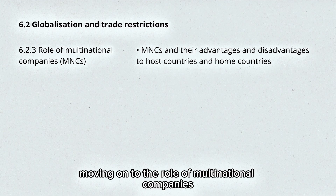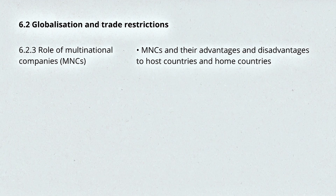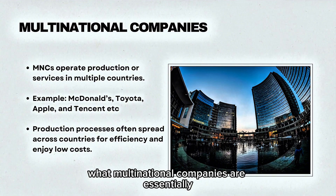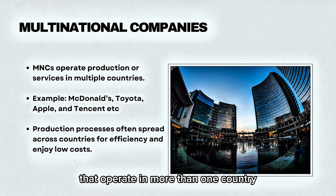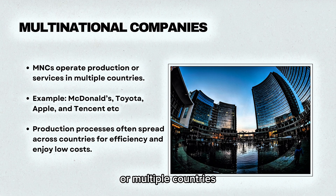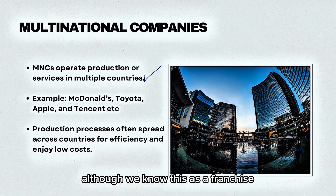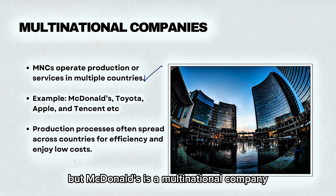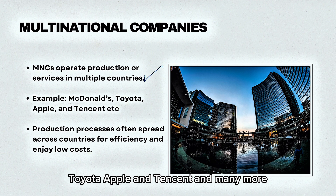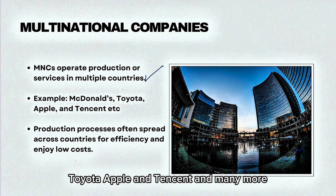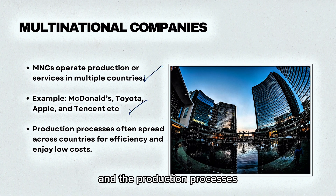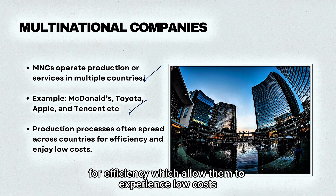Moving on to the role of multinational companies. Multinational companies are essentially very large companies that operate in more than one country. Some examples include McDonald's, Toyota, Apple, and Tencent, among many more. Their production processes are often spread across countries for efficiency, allowing them to experience lower costs.